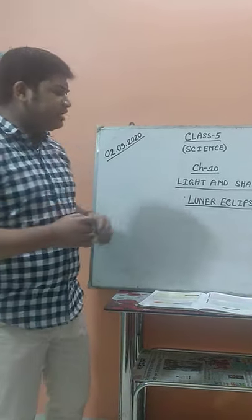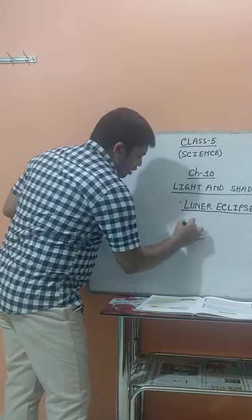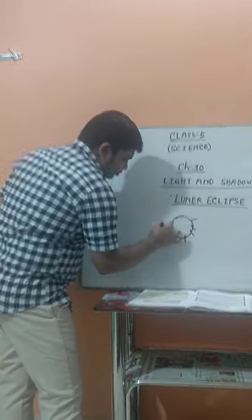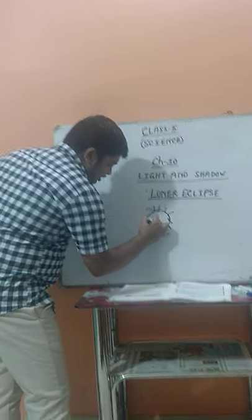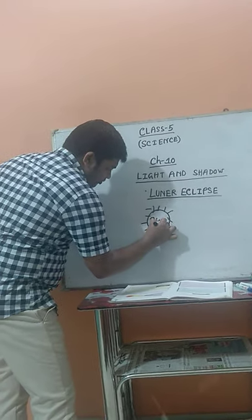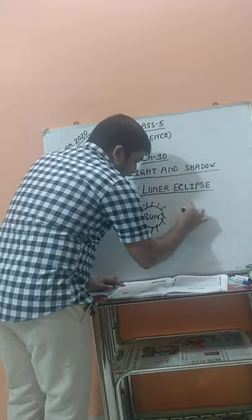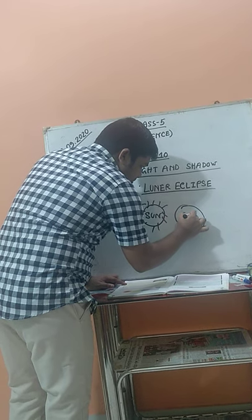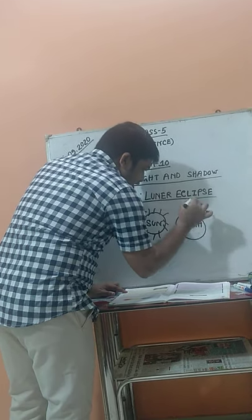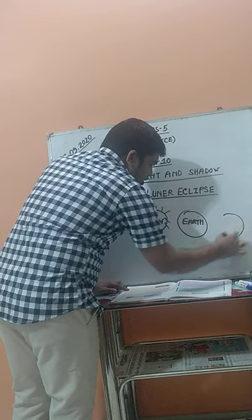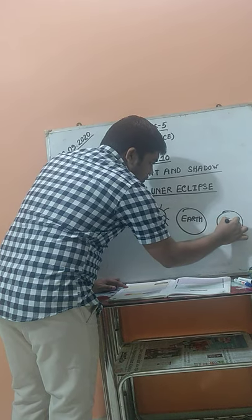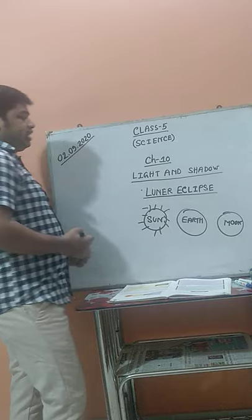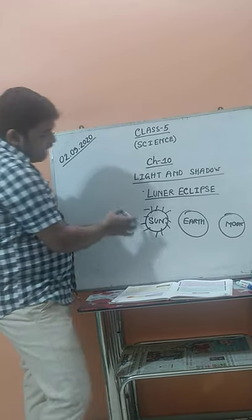Now first, you see here — I am going to draw a diagram. This one is the sun. Now in the center, this one is the earth, and the third one is the moon.